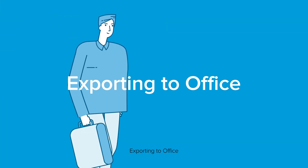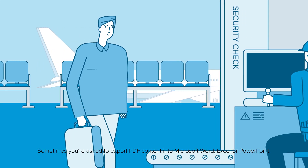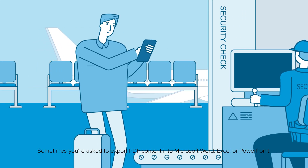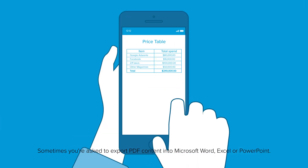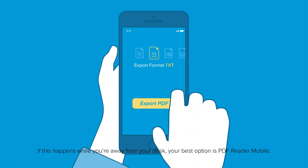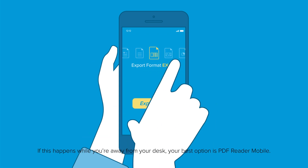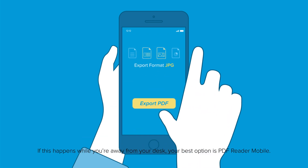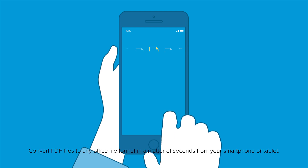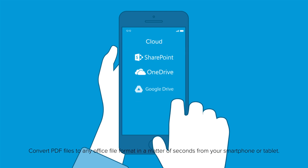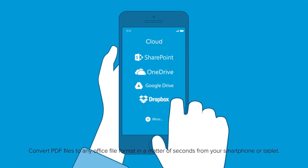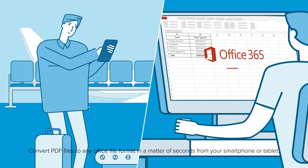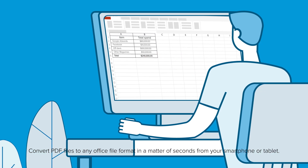Exporting to Office. Sometimes you're asked to export PDF content to Microsoft Word, Excel, or PowerPoint. If this happens while you're away from your desk, your best option is PDF Reader Mobile. Convert PDF files to any Office file format in a matter of seconds from your smartphone or tablet.